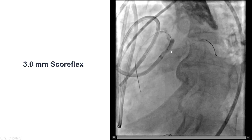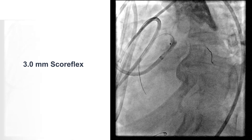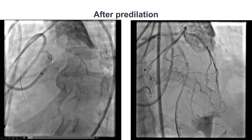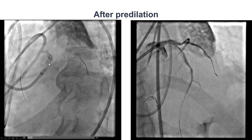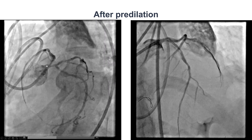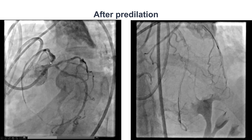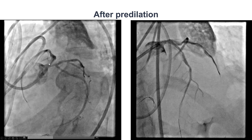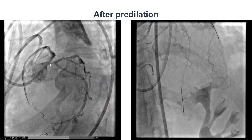We used the Scoreflex balloon again to predilate the LAD, and despite heavy calcification there was good expansion. IVUS confirmed that most of the calcium was deep. After predilatation, we achieved good flow into the LAD, which appeared to be a good-sized vessel. However, there was some disease or possible dissection next to the origin of the circumflex. When performing PCI of proximal or ostial LAD CTOs, we must ensure there is no compromise of the circumflex — in this case from a possible dissection plane — so we decided not to leave the circumflex lesion untreated.